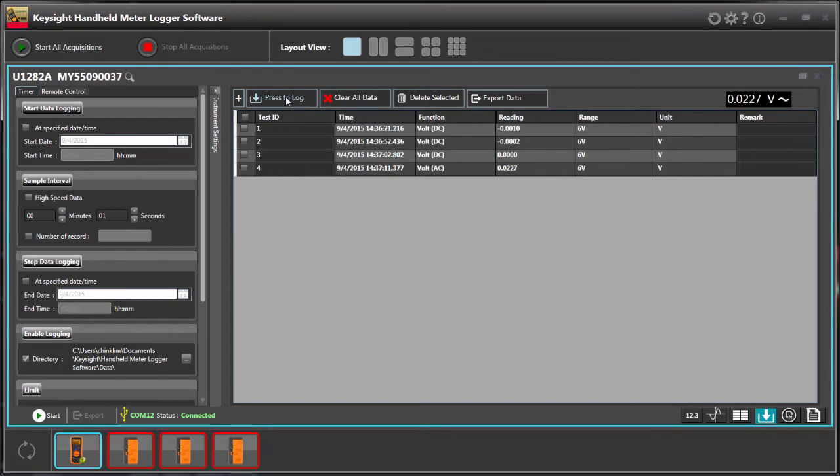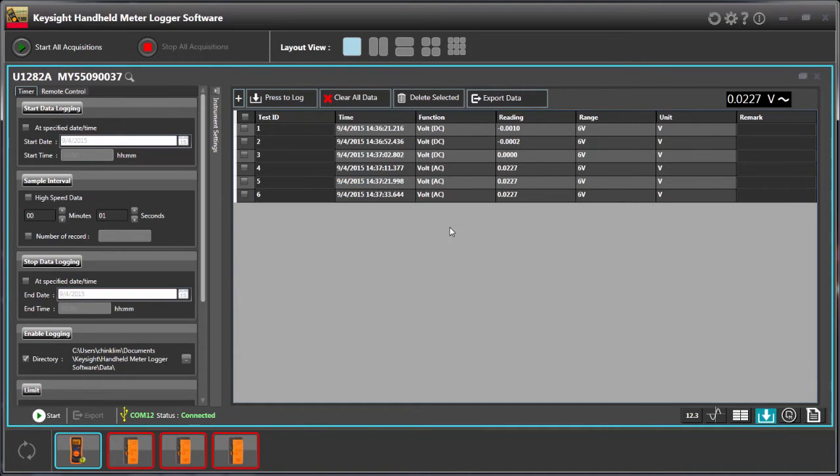You can also press to lock on the software to record the readings, the instant readings from the multimeters. Let me press again, you can see here. You can edit the test ID, you can add in the remarks as well.